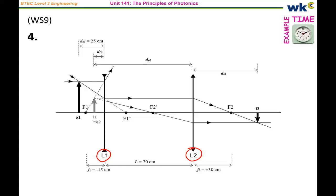The important thing is to notice that everything starts with the object — object 1, that's the object of the first lens. That object will generate an image, image 1, which is also shown here. It's a virtual image because it's an image that forms before the lens itself. Then that image of the first lens will act as the object for lens number 2, and that object will generate a final image. The question asks about the properties — size and position — of that last image.